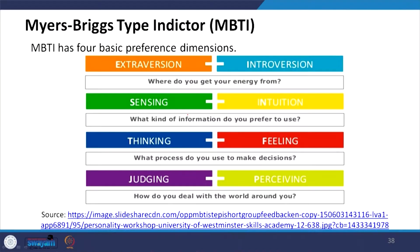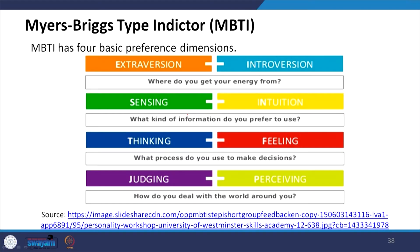MBTI has four basic preference dimensions: Extraversion vs. Introversion, Sensing vs. Intuition, Thinking vs. Feeling, and Judging vs. Perceiving. Where do you get your energy — that is Extraversion and Introversion. What kind of information do you prefer to use — that is Sensing. What process do you use to make decisions, Thinking or Feeling? How do you deal with the world around you — Judging or Perceiving?